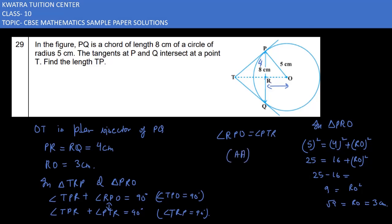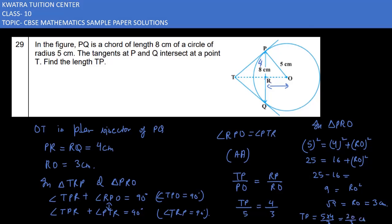By similarity, their sides are in proportion. So TP over PO equals PR over RO. That gives us TP over 5 equals 4 over 3. Therefore TP equals 5 over 3 into 4, which equals 20 over 3 cm.